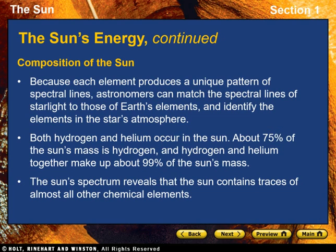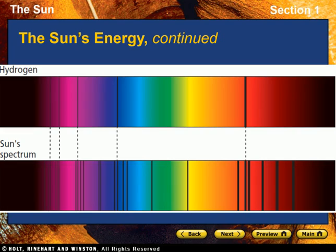Scientists can also deduce the temperature, density, and pressure of the gas. Because each element produces a unique pattern of spectral lines, astronomers can match the spectral lines of starlight to those of Earth's elements — as shown on screen — and identify the elements in the star's atmosphere.